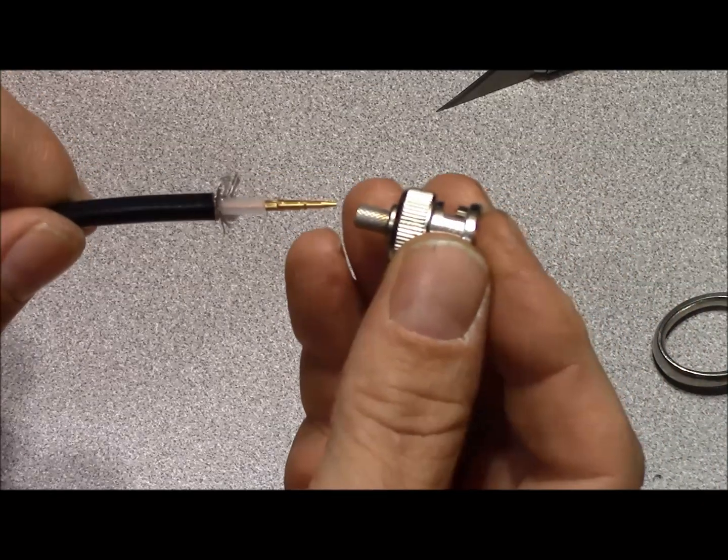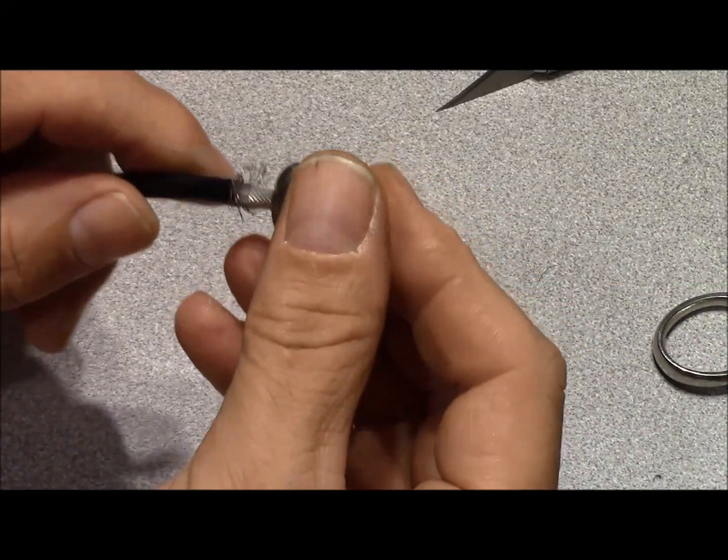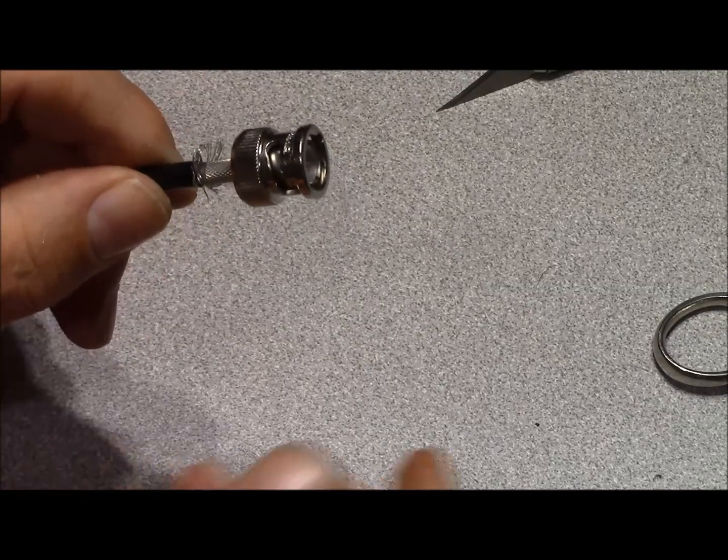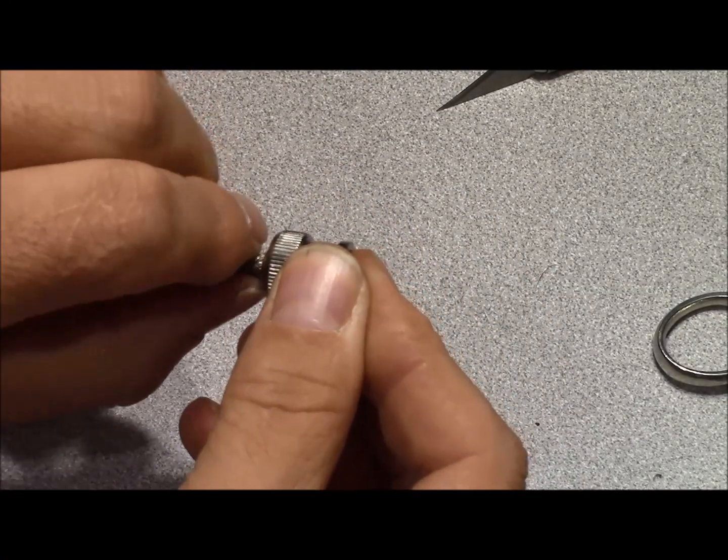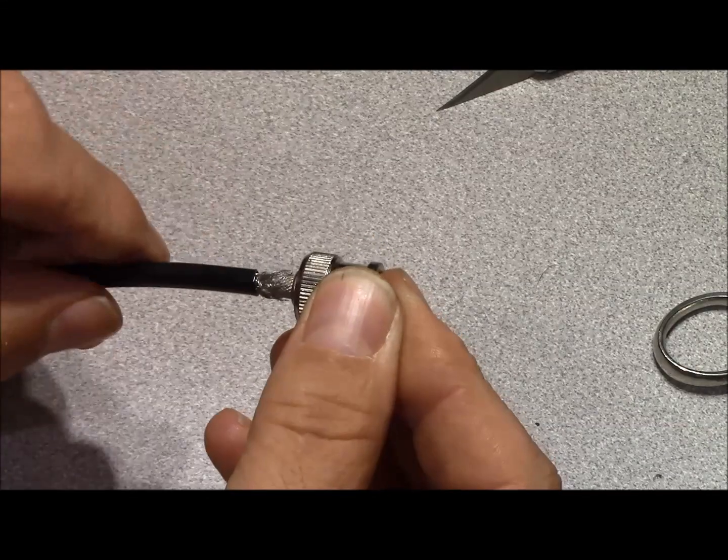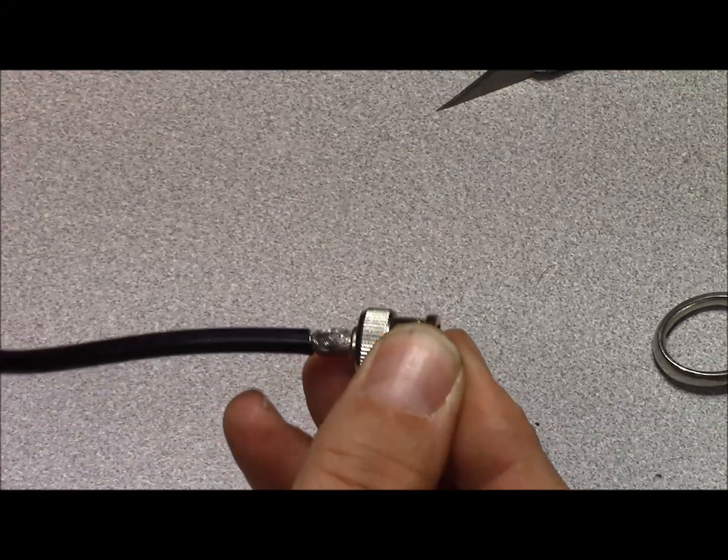Take your connector body, slide it over top, push it in and you'll feel it snap. Fan your braid over top of the tail of the connector. Now bring your ferrule up.